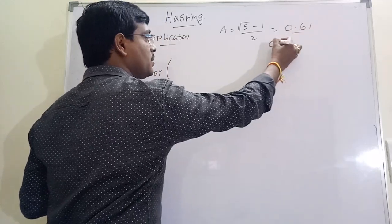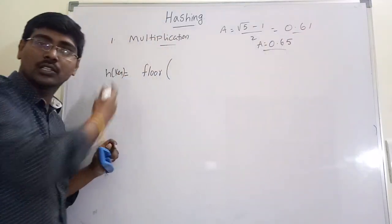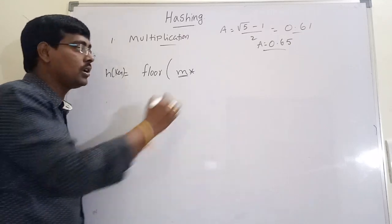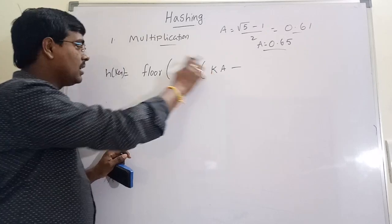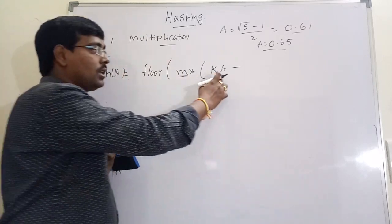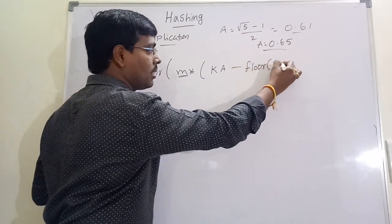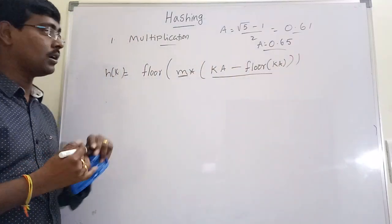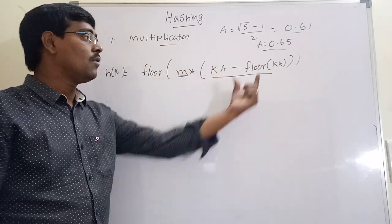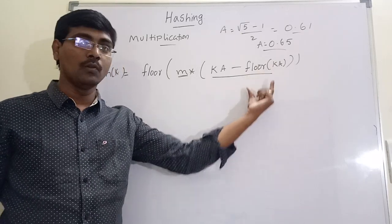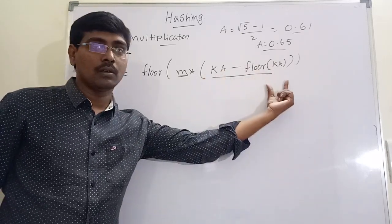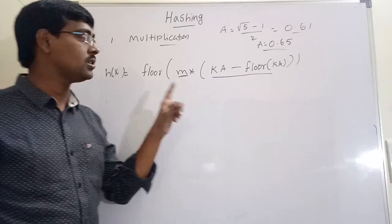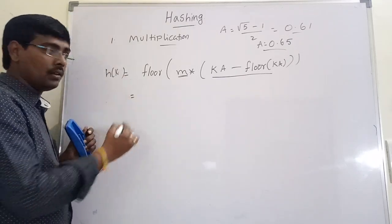In the multiplication method, h(k) = floor of m × (k×a − floor(k×a)), where a is a constant value. We assume a = (√5 − 1) / 2, which is approximately 0.61, or we use a fixed constant approximately 0.65. Here m is the size of the table and k is our key. This produces the fractional part of k×a, which is then multiplied by the table size to get a position.